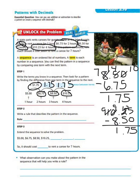Step two says to write a rule that describes the pattern in this sequence. If you notice, we're going up by $1.75 with each term. So our rule would be: add $1.75.